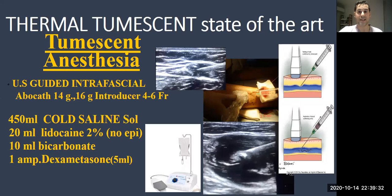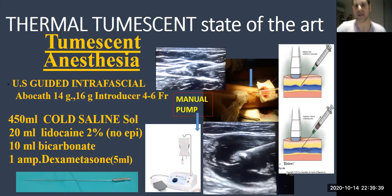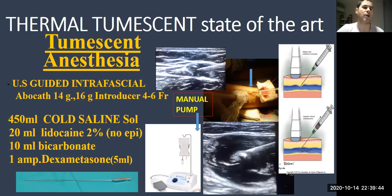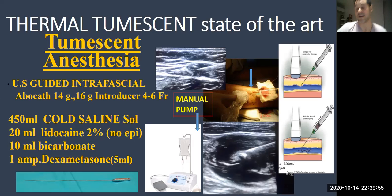Regarding the tumescent anesthesia, we perform ultrasound-guided administration. We can do it manually or using a pump. We use 450 ml of saline solution, 20 ml of lidocaine at 2%, 10 ml of bicarbonate, and 5 ml of dexamethasone.